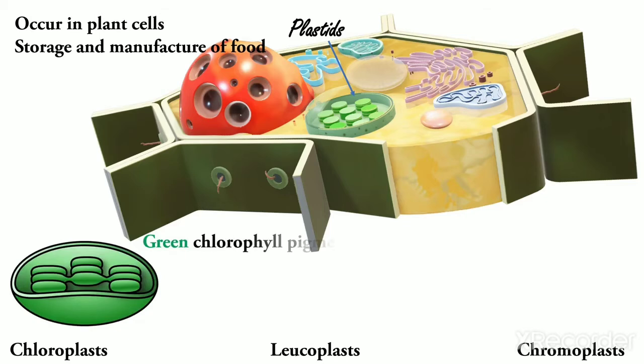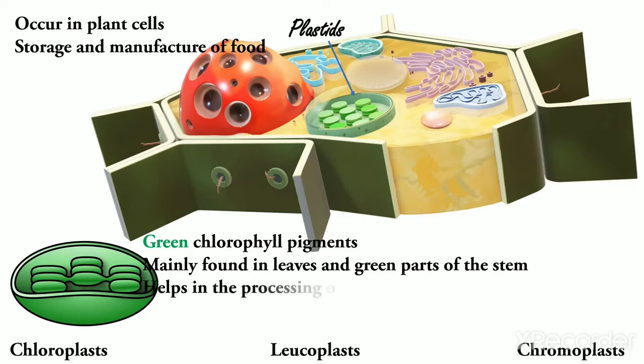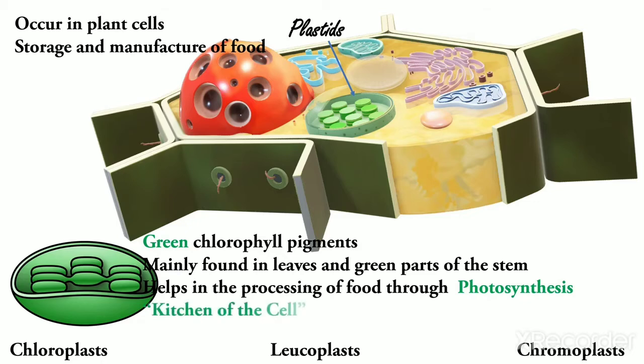Chloroplast. They are green chlorophyll pigments which are mainly found in leaves and green part of the stem. It helps in the synthesis of food through the process of photosynthesis. They are also called the kitchen of the cell.